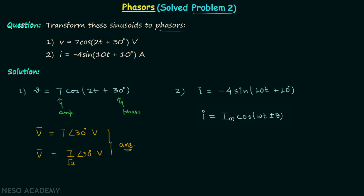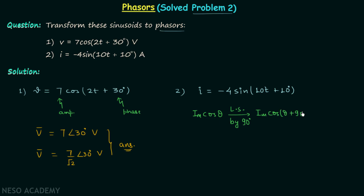So we need to get rid of two things: the negative sign and the sine function. We know if we have cos(θ) with amplitude Im and we perform a left shift by 90 degrees, we get a new function Im·cos(θ + 90°). This function equals negative Im·sin(θ). Comparing, Im equals 4 and θ equals 10t + 10°. Therefore Im·cos(θ + 90°) with these values equals current i.